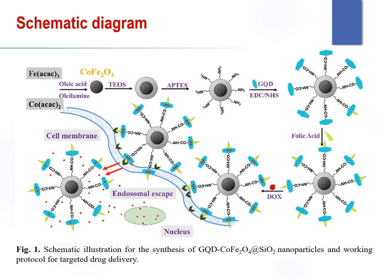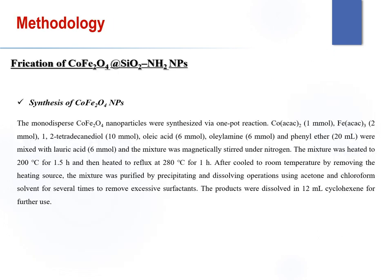Here is the schematic illustration of the whole process. The GQDs were synthesized by the carbonization of citric acid. The cobalt was synthesized via thermal decomposition. The surface modification of cobalt nanoparticles with silica and amine groups enabled covalent bonding with GQDs. Then, the attached folic acid led to tumor-targeted delivery and the intracellular release of anti-cancer drug DOX in HeLa cells.